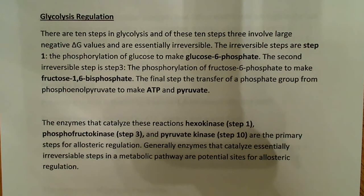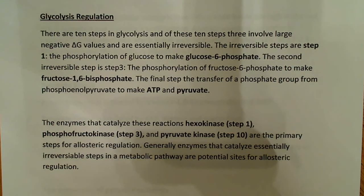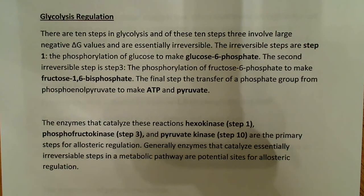Let's talk about glycolysis regulation. As I said before, there are ten steps in glycolysis, and three of them involve large negative delta G values—large negative free energy values that are essentially irreversible. Anytime you see a large negative delta G, you can assume they're what they call metabolically irreversible. They are reversible in a sense, but not relative to what we're talking about. These are also usually the reactions that require ATP—the two reactions that require ATP, which are the priming phase of glycolysis, requiring two ATP molecules at the first step and the third step.